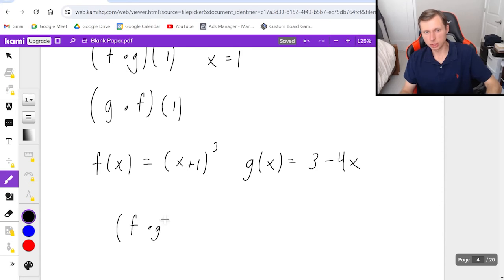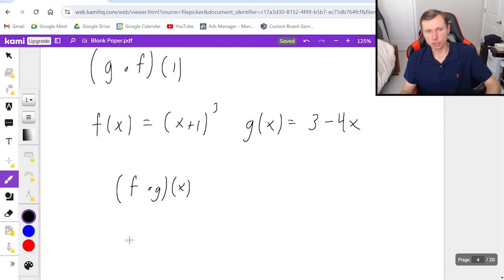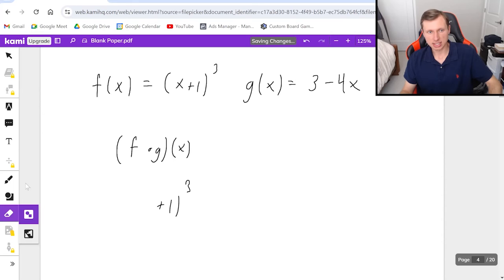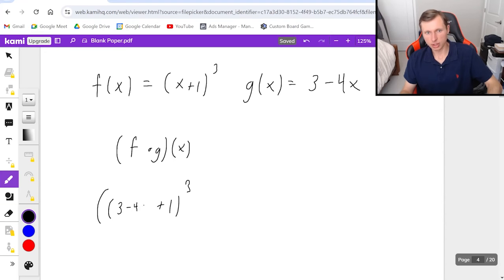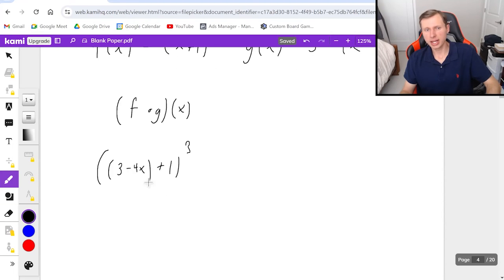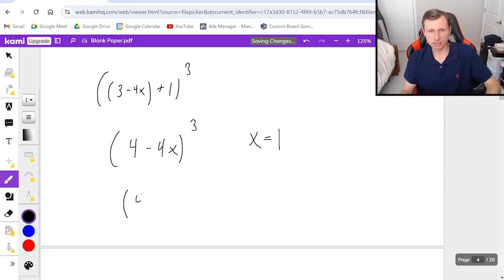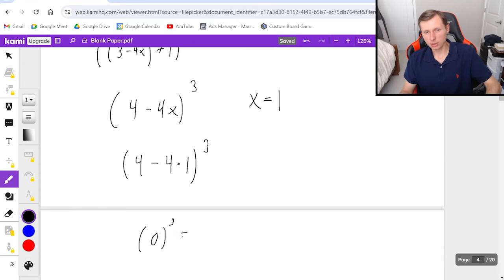Like, for instance, first if I want to find f of g of x, then that means I'm plugging g into f. So instead of x + 1 cubed, I have to put in 3 - 4x right there where the x was a minute ago. Then I can simplify this a little bit because 3 - 4x + 1 ends up being 4 - 4x cubed. And then if I want to plug in x = 1, which I do, then all I got to do is 4 - 4 times 1 cubed. So that's going to be 4 - 4, so it's 0 cubed, which is just 0. Final answer for that one.